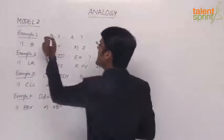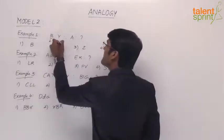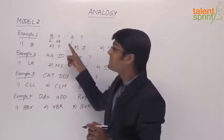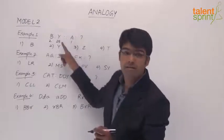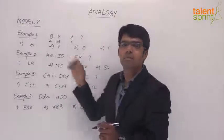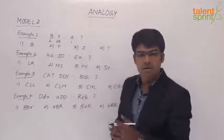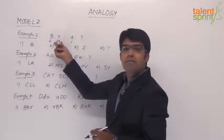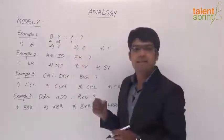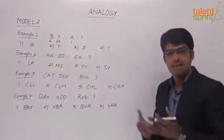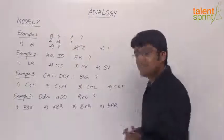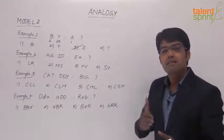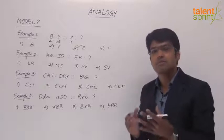Going by the positions, we know that B is the second letter of the English alphabet, whereas Y is the 25th letter and A is the first letter. B is actually the second letter in the alphabetical order, and Y is the second letter in the reverse alphabetical order. If you go by the reverse alphabetical order we have Z, Y, X, W and so on — so Y comes in the second position from the reverse order. The logic is: if you take the second letter from the alphabetical order, the pair is completed with the second letter from the reverse order. Likewise, A is the first letter in the alphabetical order, so the first letter in the reverse alphabetical order is Z. So the answer is Z — if B is related to Y, then A is related to Z.